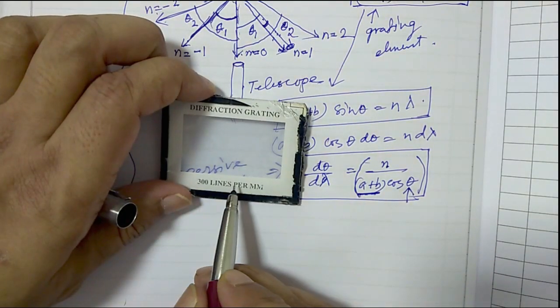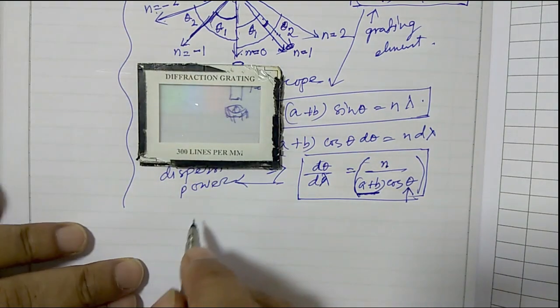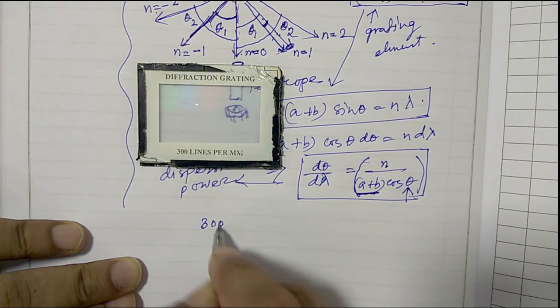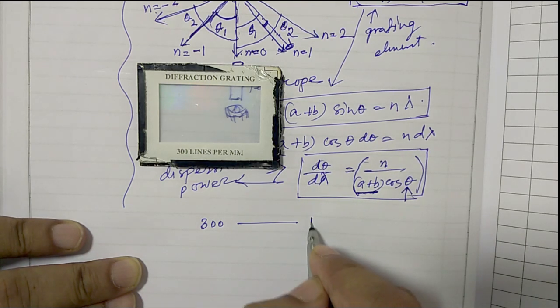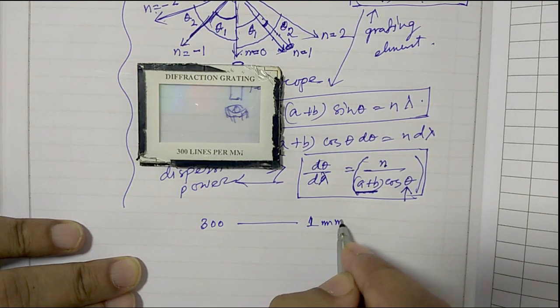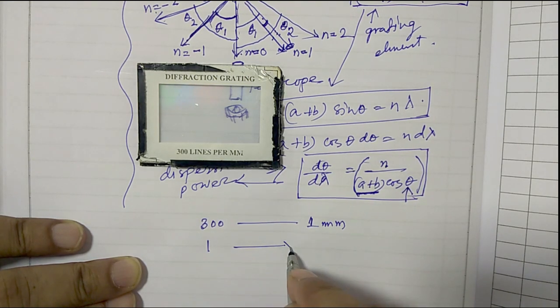So in our case, we have 300 lines per millimeter. So 300 lines in one millimeter, one line in one millimeter divided by 300 lines.